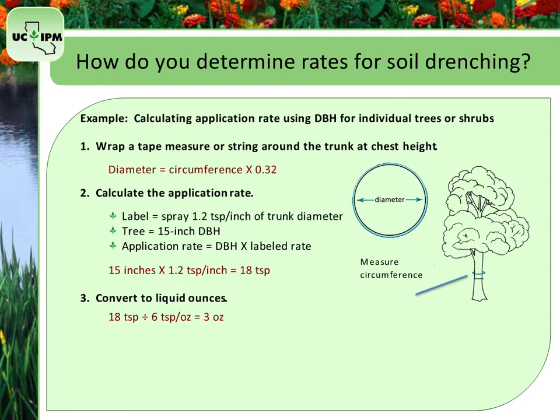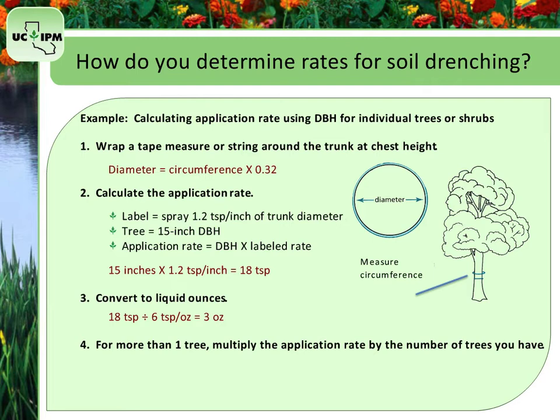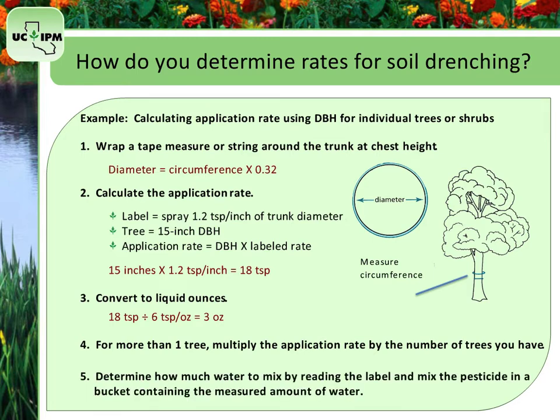If you have more than one tree, multiply the application rate by the number of trees you have. Now determine how much water to mix with the product by reading the label. Mix the pesticide in a bucket containing the measured amount of water. Be sure you only apply the correct amount of finished solution to each tree if you are mixing solution for more than one tree.